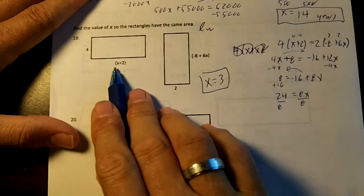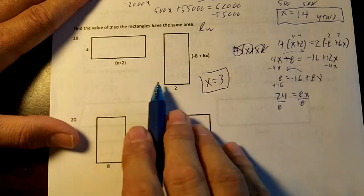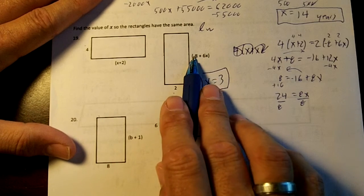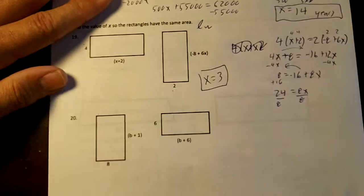If you check it, it'll be equal. 3 plus 2 is 5. 5 times 4 is 20. 6 times 3 is 18. 18 minus 8 is 10. 10 times 2 is 20. So it would work.